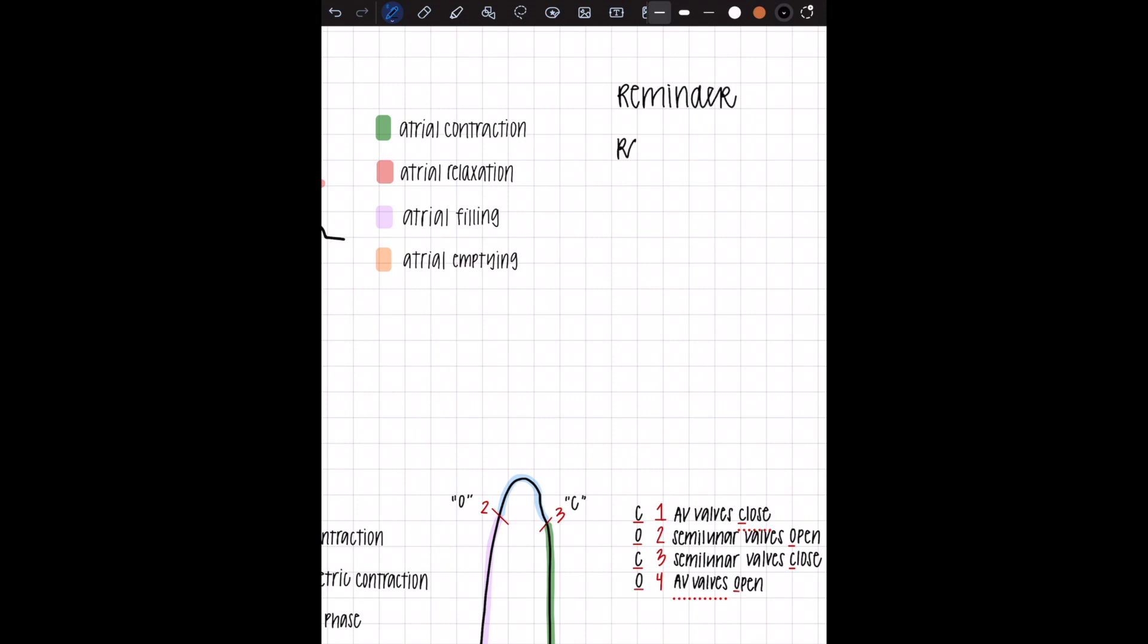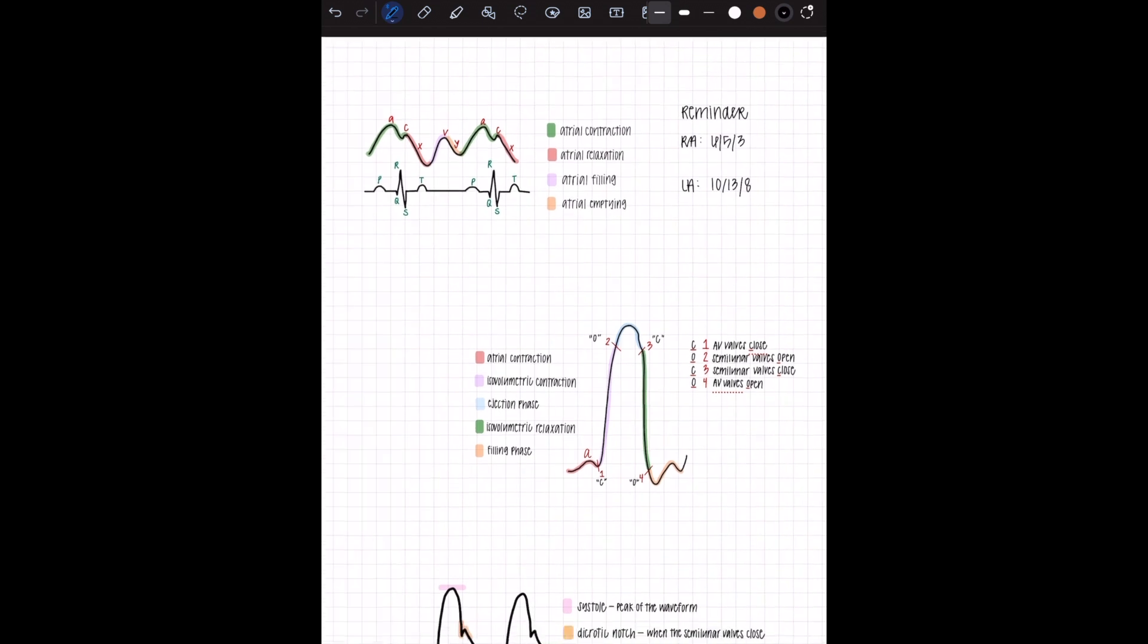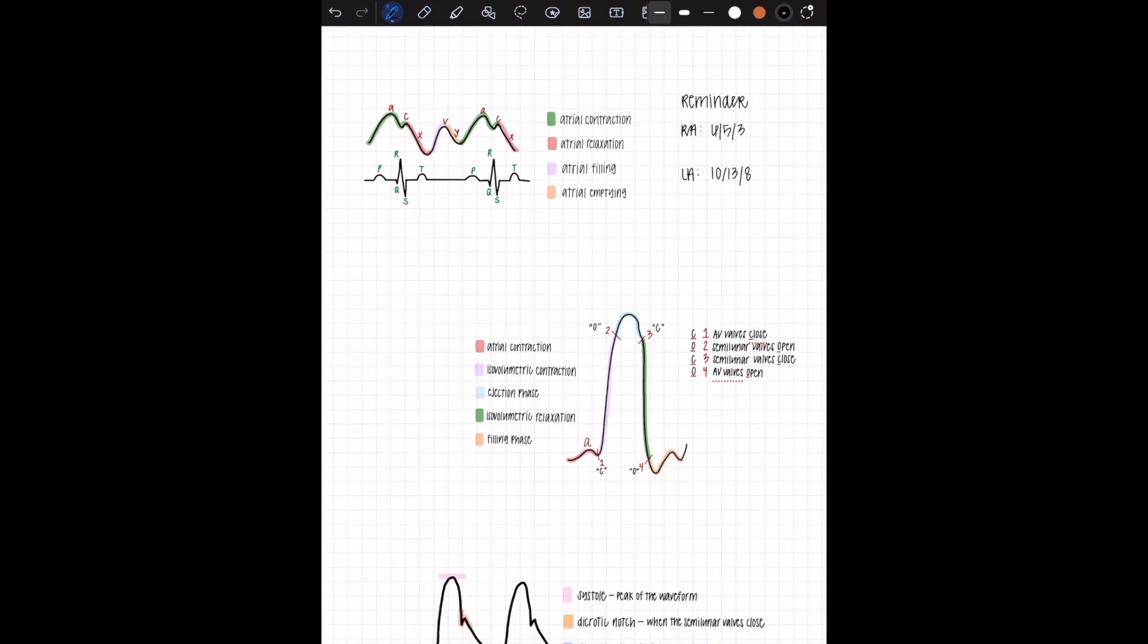Here are some reminders because we already went over normals. RA and LA, right atrium, left atrium. RA is 6-5-3, LA is 10-13-8. Now we're going to see visually what these numbers mean and where they are on your waveforms.